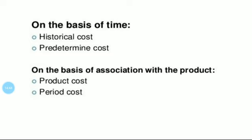On the basis of association with the product, the costs are classified into product cost and period cost. First, product cost. These are the costs which are directly associated with the product — these are the costs of making finished products. Examples of product cost are direct material, direct labor, and factory overhead; thus, these are manufacturing costs. Second, period cost. These are the costs charged as an expense in the profit and loss account of the period in which they are incurred. These costs are transferred to the profit and loss account of a particular period in which that expense is incurred; they are incurred on the basis of time. Examples: insurance, depreciation, etc.